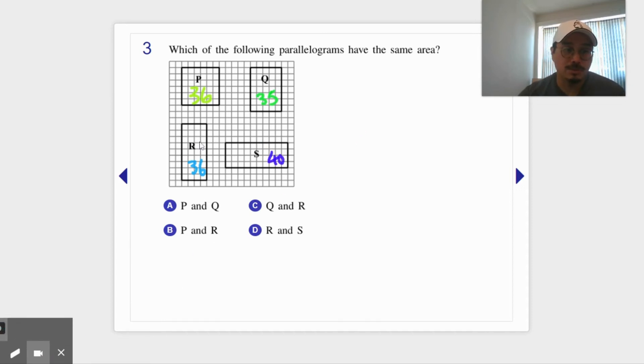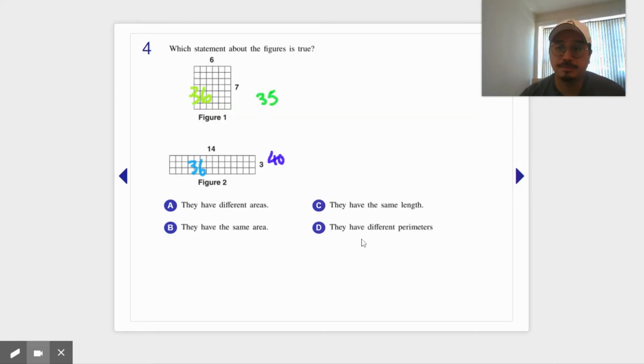So these colors are terrific, but I don't know if anyone can see it. Yeah, P and R, they're the same, so P and R. Now let's see which statement, six by seven is 42, three times 14, yeah 42. So they have the same area.